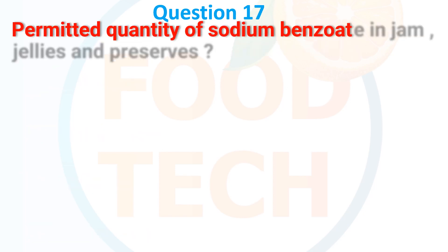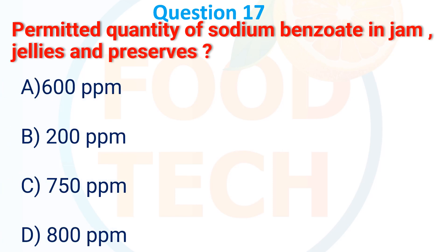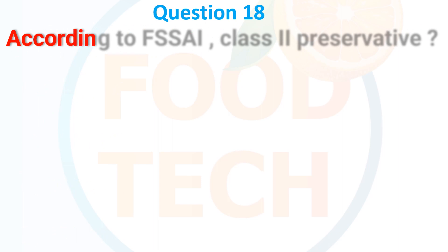Permitted quantity of sodium benzoate in jam, jelly and preserves: A. 600 ppm, B. 200 ppm, C. 750 ppm, D. 800 ppm. The answer is B. 200 ppm.